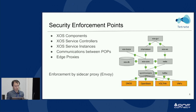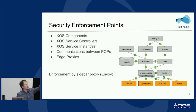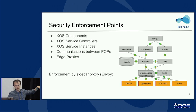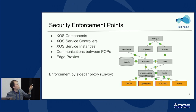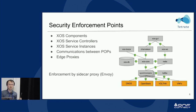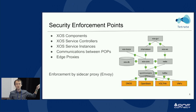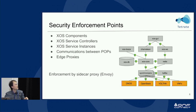Let's talk about where we enforce security. In this diagram, we have XOS services with the service controller at the bottom. Every component of XOS should be secured — each green part represents a secure connection between components. Edge proxies and communication between POPs should also be secured and encrypted. Every component should be deployed with a sidecar proxy that has an identity issued by Citadel.